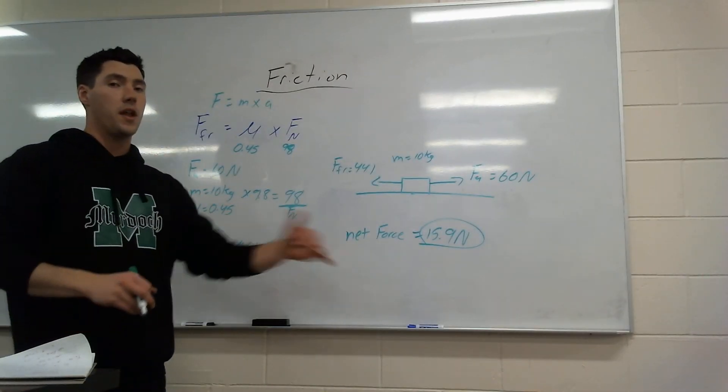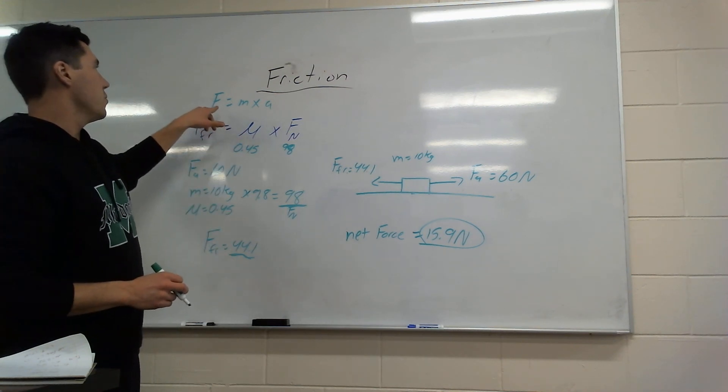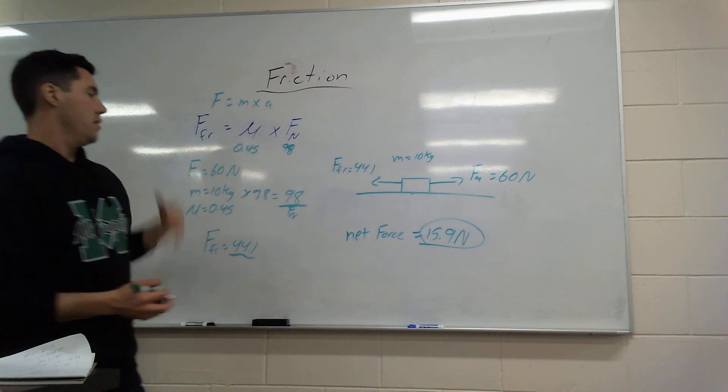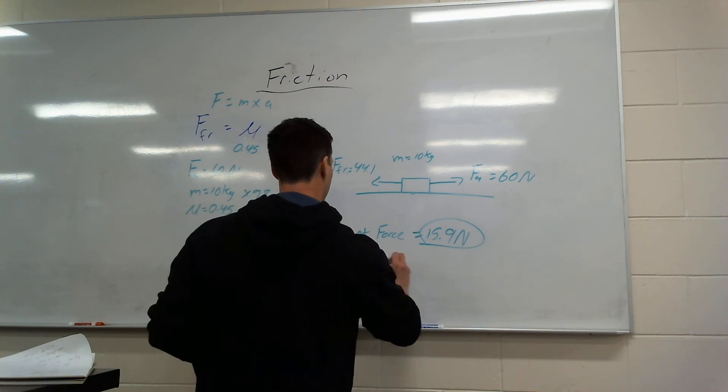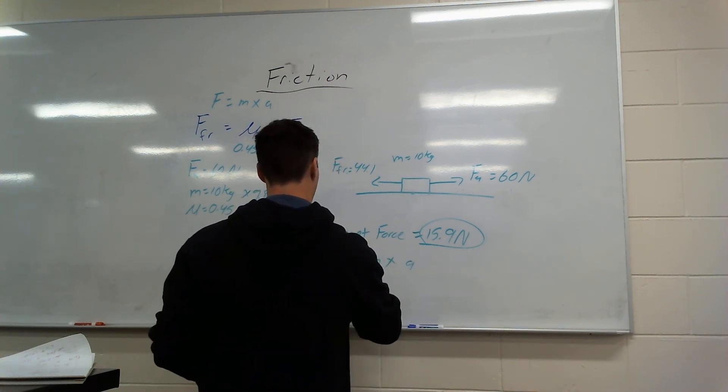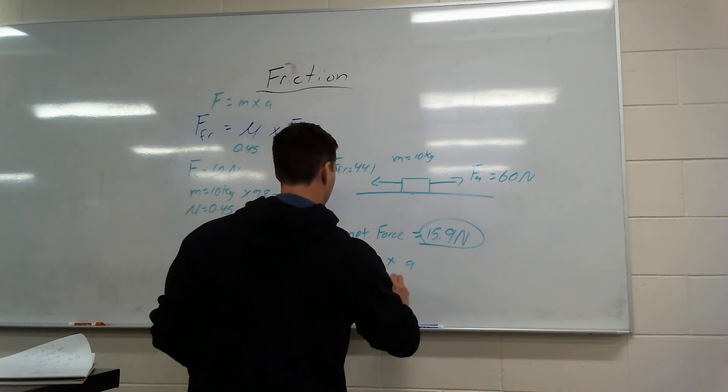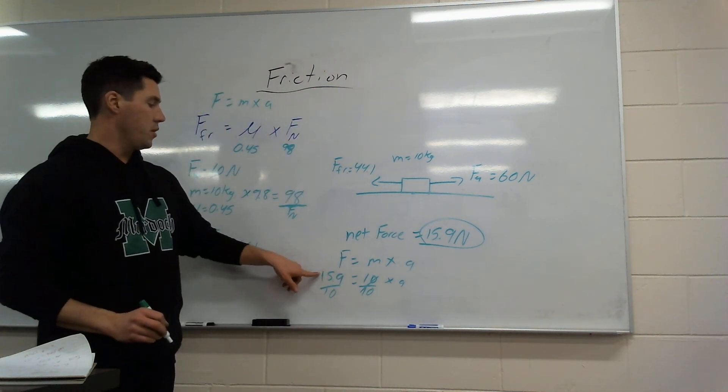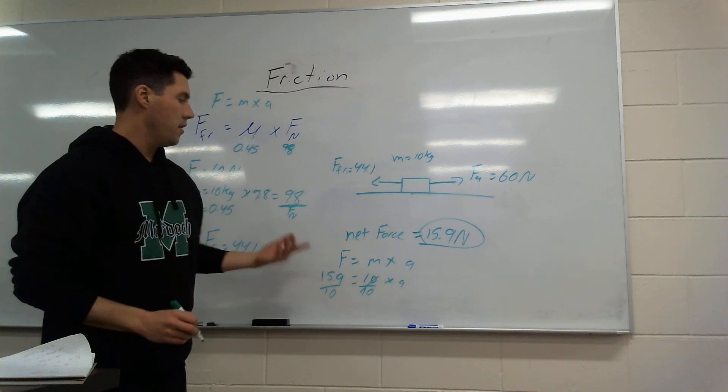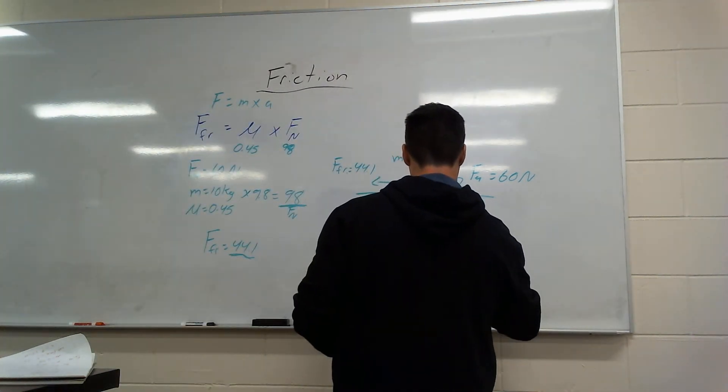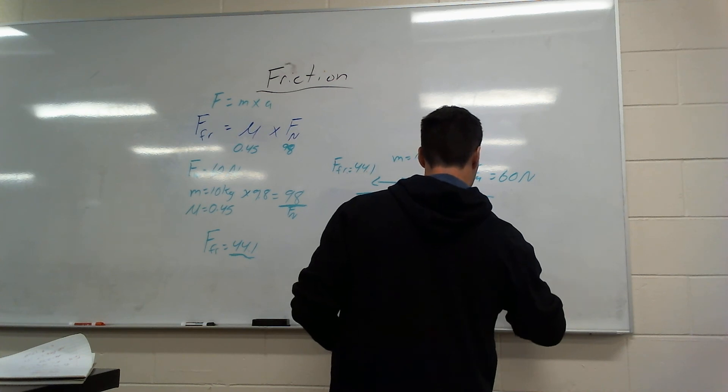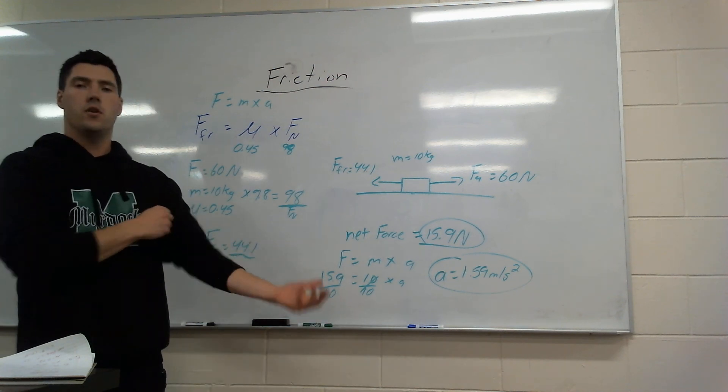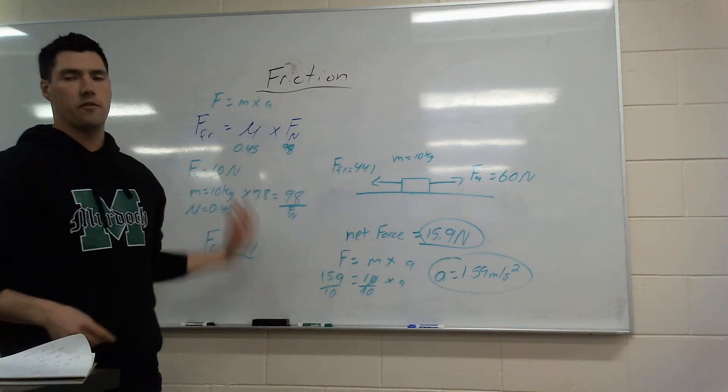It asks me first for net force, and then it asks me for acceleration. So I have my net force of 15.9, I have a mass of 10 from the start of the question. I can find my acceleration. So if I want to go F equals M times A, I have my force, my net force 15.9, equals mass of 10 times A. So divide by 10. 15.9 divided by 10. My acceleration is going to be 1.59 meters per second squared. So I can figure out how fast this object is going to move even though the force friction is there.